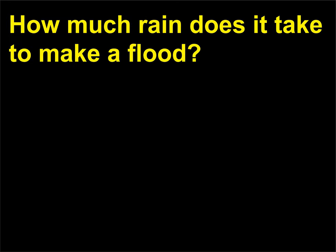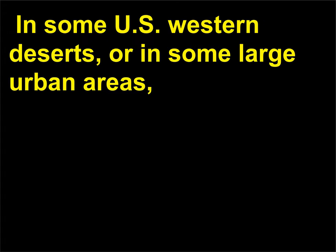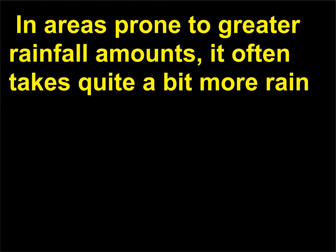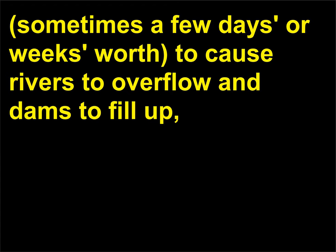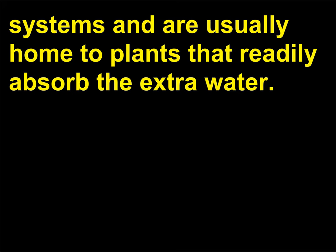How much rain does it take to make a flood? The amount varies widely for different areas. In some U.S. western deserts or large urban areas, just a few minutes of strong rain will cause a flash flood in canyons and low-lying areas. In areas prone to greater rainfall, it often takes quite a bit more — sometimes days or weeks of rain — to cause rivers to overflow and dams to fill, raising concerns for those who live downstream. Areas that normally receive more rainfall have better natural drainage systems and plants that readily absorb the extra water.